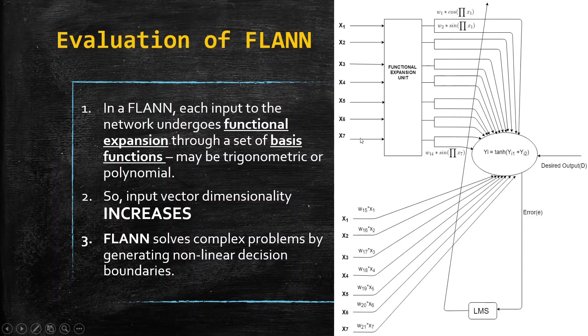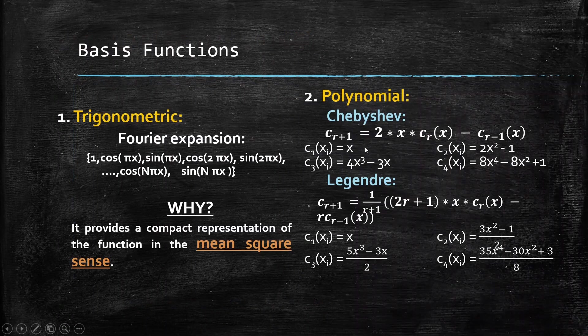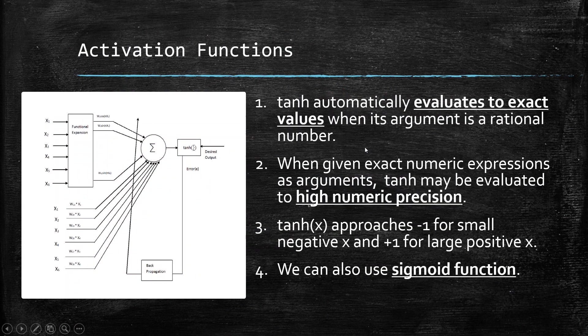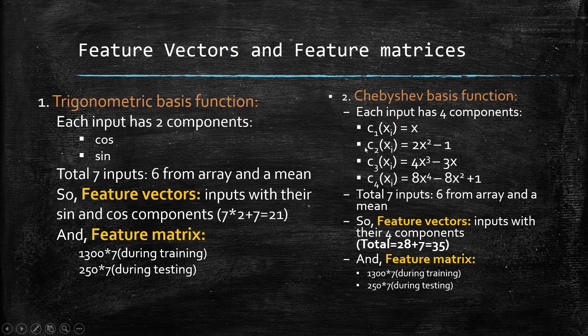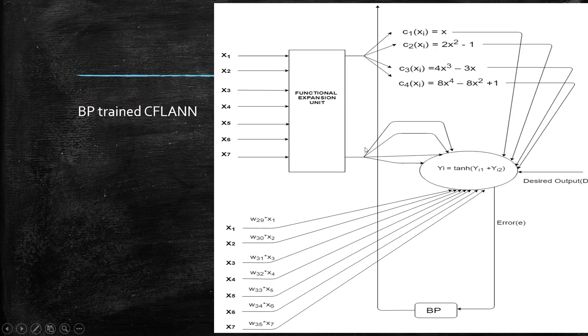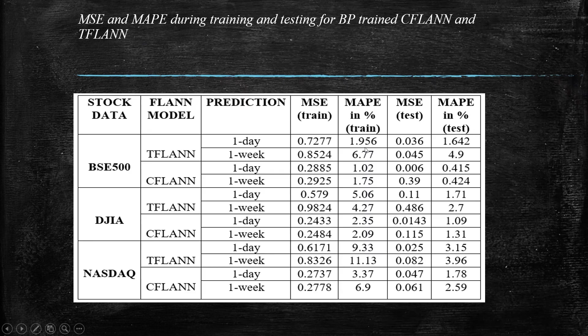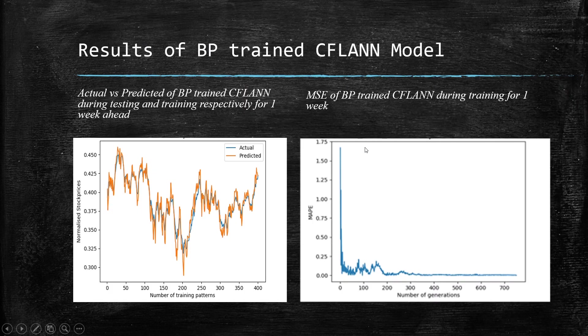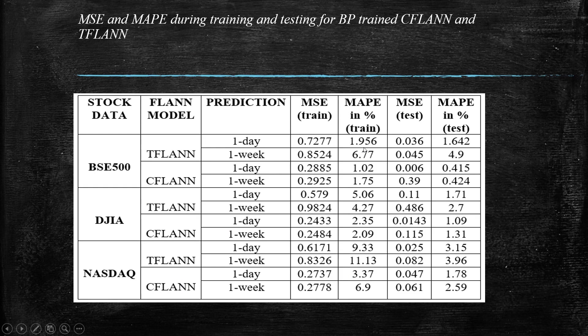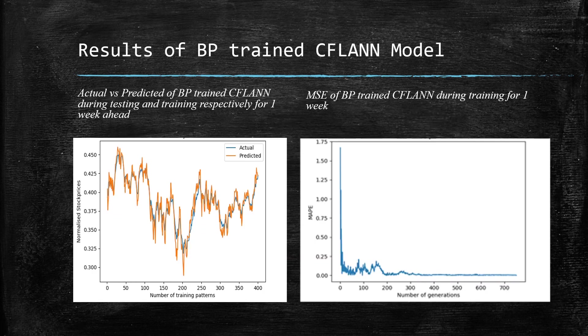Here are the various plots and graphs. These are the MSCN mapped during training and testing for BP, C-FLAN, and T-FLAN.